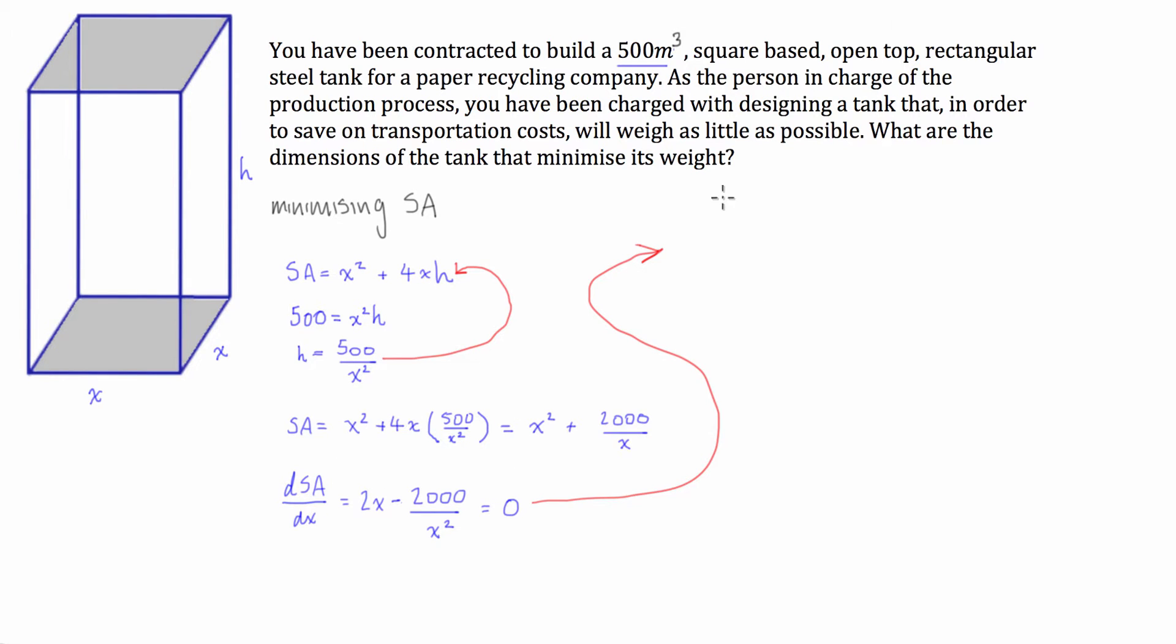So we're just using algebra. We've got 2X minus 2,000 divided by X squared equals 0, so we're going to have 2X equals 2,000 over X squared, then we're going to have 2X cubed is equal to 2,000, and then we're going to have X cubed is equal to 1,000 or X is equal to 10.